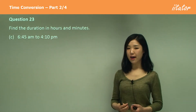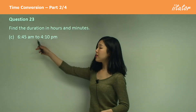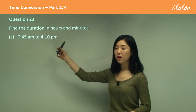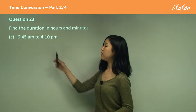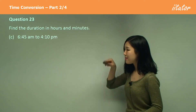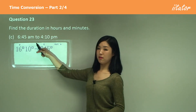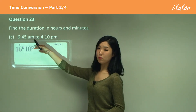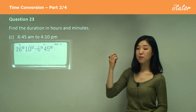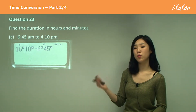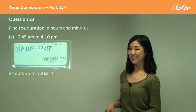Now, 6:45 a.m. to 4:10 p.m. When you have a.m. you can leave it as is, but when you have p.m. you must convert it to 24-hour time. So 4 p.m. becomes 16:00, meaning you enter 16°10' minus 6°45'. Whenever you see afternoon (p.m.) time, always convert it to 24-hour time first. The answer is 9 hours and 25 minutes.